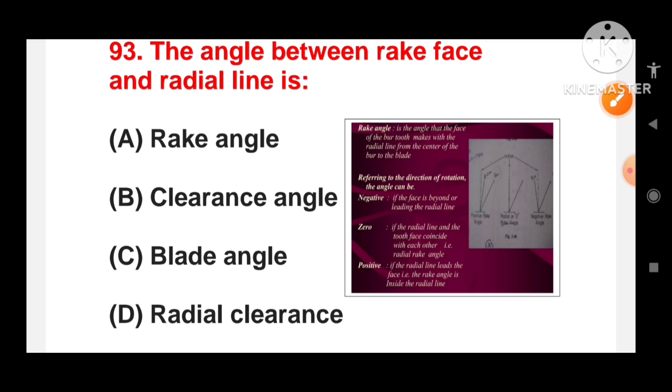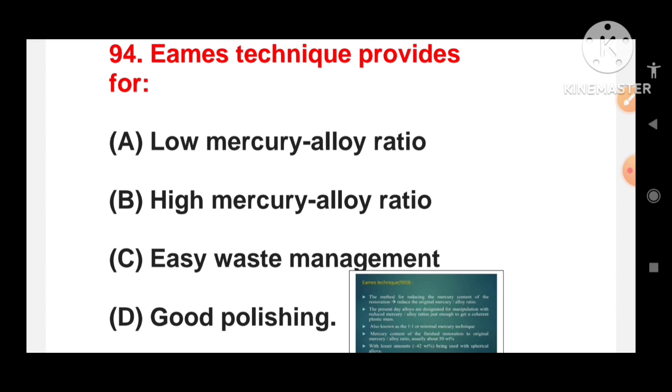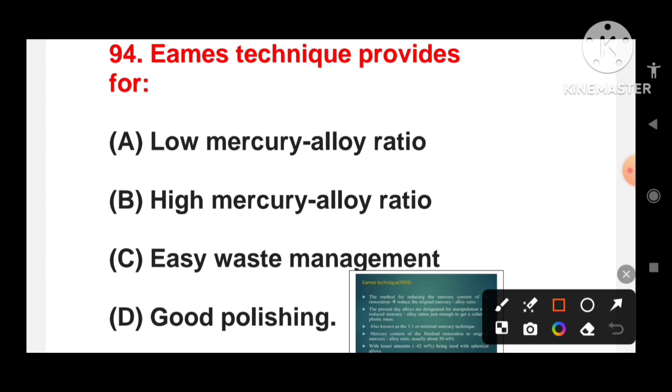AIMS technique provides for: low mercury alloy ratio, high mercury alloy ratio, easy waste management or good polishing? This is for the low mercury alloy ratio. The AIMS technique is a method used in dental amalgam preparation that provides for a low mercury alloy ratio. This technique aims to reduce the mercury content in the amalgam mixture which can improve the properties of the material.